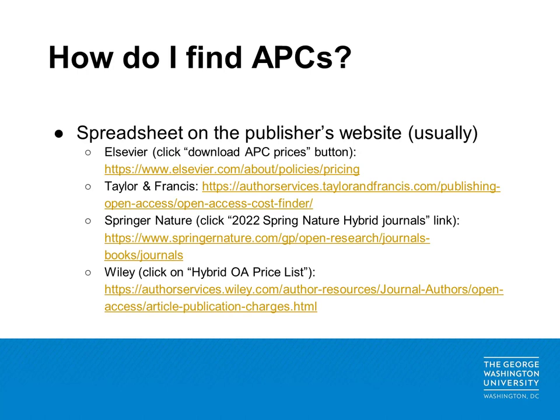What are the best strategies for finding the exact cost of an APC? Many publishers will include a spreadsheet with APC costs or a cost calculator on their company webpage, although sometimes these prices can be difficult to locate. There are two types of journals that include open access content. Hybrid journals contain both open access articles and articles that are restricted to subscription-based readership, while closed journals contain articles limited to subscription-based readership only. Below, I have included links and instructions for locating APCs for journals published by Elsevier, Taylor & Francis, Springer Nature, and Wiley. Many other journal publishers have similar pages dedicated to pricing policies.